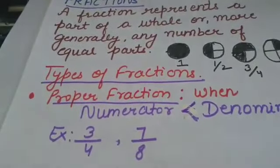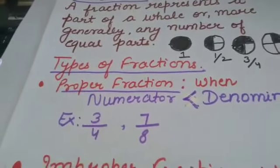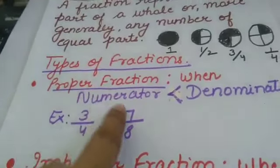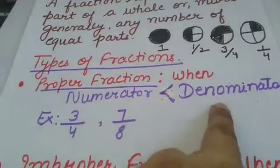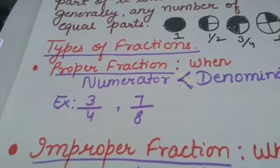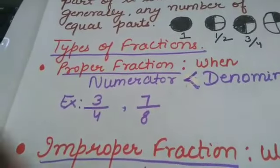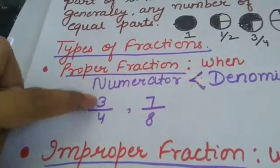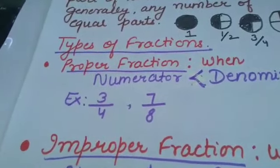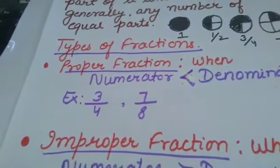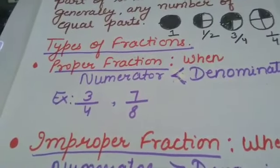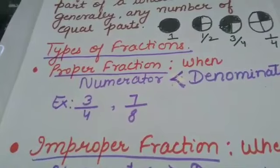Proper fraction: a proper fraction is one where the numerator is less than the denominator. Please note that a proper fraction is always less than 1. Here the numerator is less than the denominator, and here also the numerator is less than the denominator. So these are proper fractions. You can think of more examples of proper fractions.